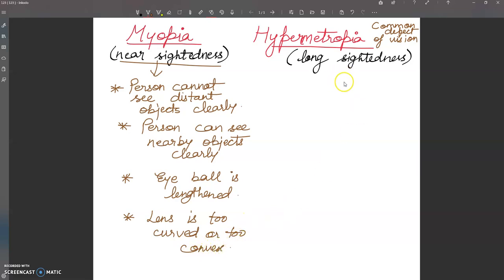If we talk about hypermetropia, there is long-sightedness. Here, the person cannot see nearby objects clearly.